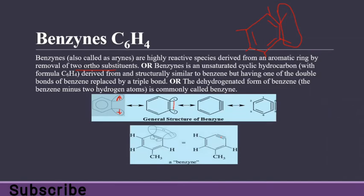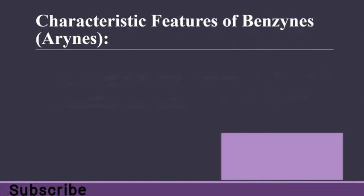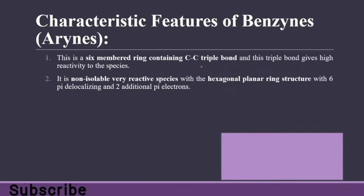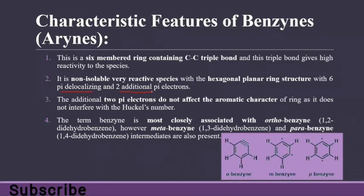Benzyne can form an additional pi bond. Normally benzene has six pi electrons, but now there are two more. However, these additional pi electrons do not take part in resonance because the triple bond is outside the electron cloud. This is a six-membered ring containing a carbon-carbon triple bond, and this triple bond gives high reactivity to the species. It is a non-isolatable, very reactive species with a hexagonal planar ring structure with six pi delocalizing electrons and two additional pi electrons. The additional two pi electrons do not affect the aromatic character as they do not interfere with Hückel's rule.